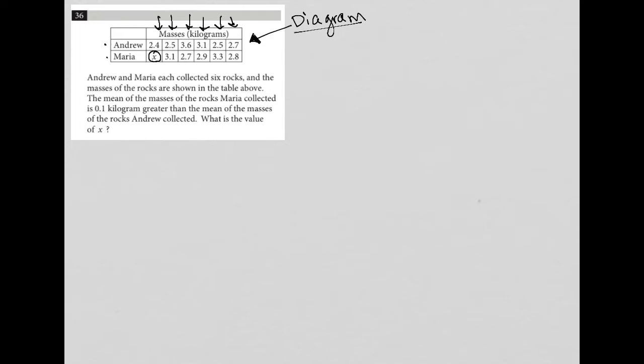Okay, so let's think about this. So the mean of the masses of the rocks Maria collected is 0.1 kilograms greater. So how would I find the mean of the masses of the rocks that Maria collected? So I look at the row for Maria and I say, okay, well, how would I find the mean or the average of these masses?